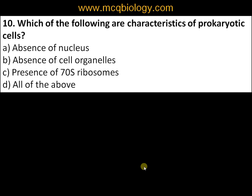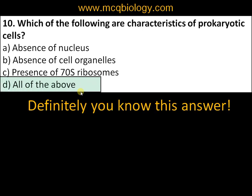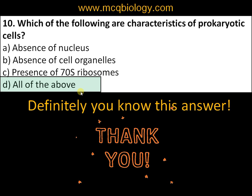Question number ten: which of the following are characteristics of prokaryotic cells? A) absence of nucleus, B) absence of cell organelles, C) presence of 70S ribosomes, D) all of the above. The answer is D) all of the above. We have covered everything from DNA to the general characteristics of prokaryotic cells. Please send your suggestions for improving this method. Thank you so much for your support. You are with biologicsxamswari.com.